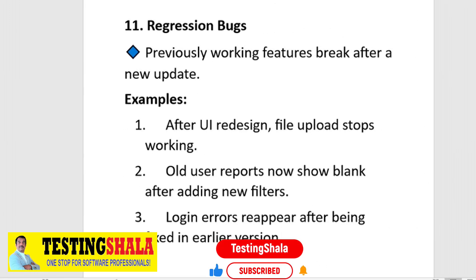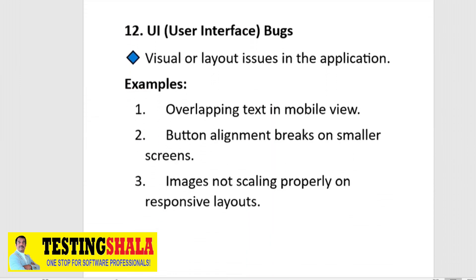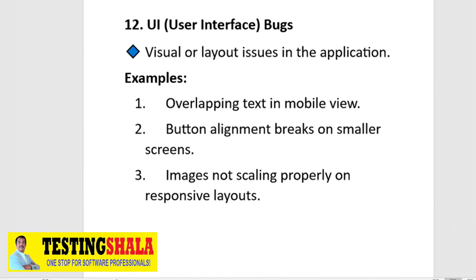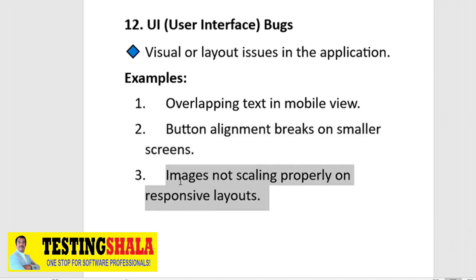The last type is UI bugs — user interface bugs involving visual or layout issues. Examples include overlapping text in mobile view, button alignment breaking on smaller screens, or images not scaling properly in a responsive layout. I hope you got these 12 different types of bugs. If you liked this video, please click the like button, subscribe if you haven't, and thanks for watching. Bye for now.